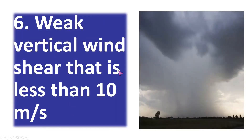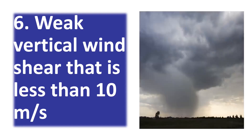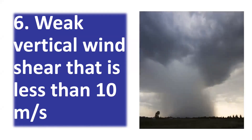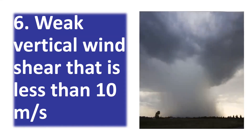Condition 6: there is weak vertical wind shear, less than 10 meters per second. With this low wind shear, there is minimal change in wind direction and speed with height in the atmosphere, which is crucial for cyclone formation. Additionally, atmospheric instability requires a warm, moist layer of air overlaid by cooler, drier air aloft, creating atmospheric instability.